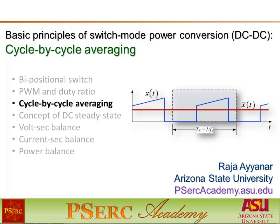Most control objectives in switch-mode power converters involve controlling the average values of different voltages, currents, or power. In this video we will formally define this periodic average, which we call cycle-by-cycle averaging. We'll go through some examples and also study some of the properties of this cycle-by-cycle averaging.